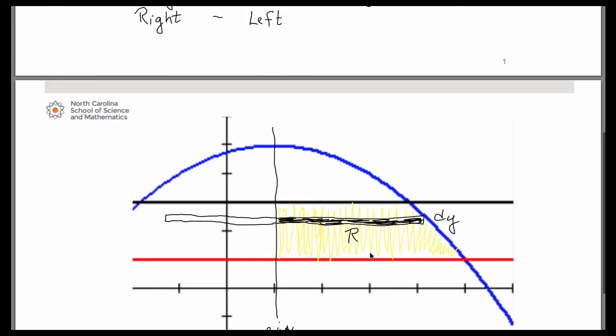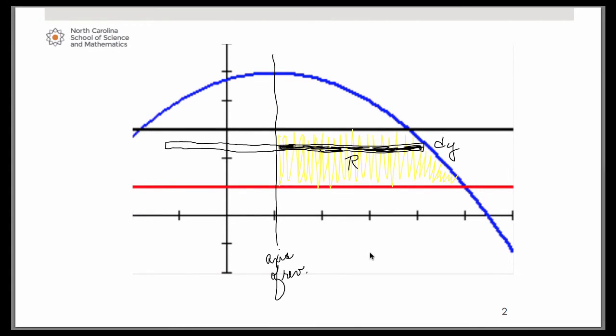So let's go ahead and set up our volume then. We will have that the volume is, now remember our limits of integration have to be y values, so in this case they are 1 to 3 of pi, and we need to take that r quantity and square it. Obviously the square root and the square cancel each other out.